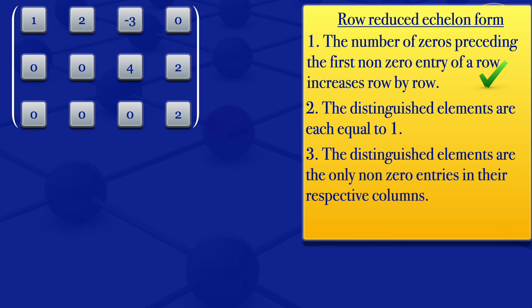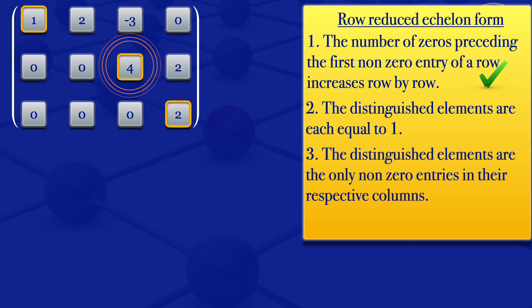So we can now go on to check condition number two: the distinguished elements should each be equal to one. For the first row, the distinguished element is a one. For the second row, it's a four. For the third row, it's a two. But the distinguished elements must each be equal to one, so we need a one here and a one there. For us to get a one in row two, we have to divide the four by four. Using elementary operations, we have to do it for all the elements in that row, so we transform row two to one over four times row two.